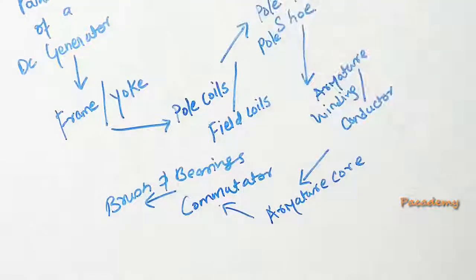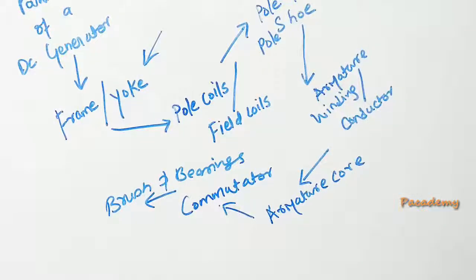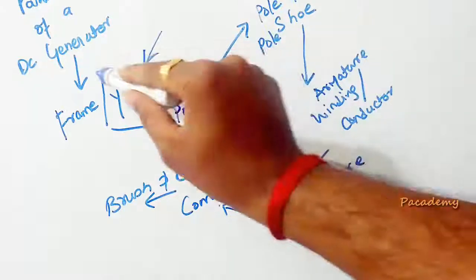This video is about the different parts of a DC generator. The first part is the frame or the yoke. The frame or the yoke is the enclosure which holds or encloses the full unit of the generator.